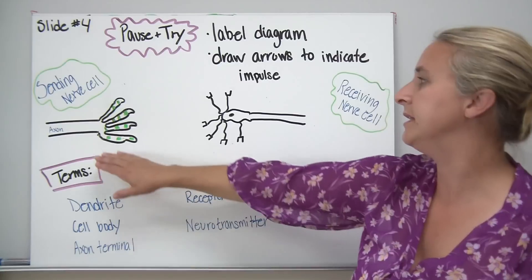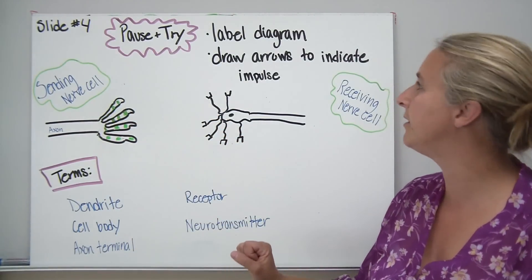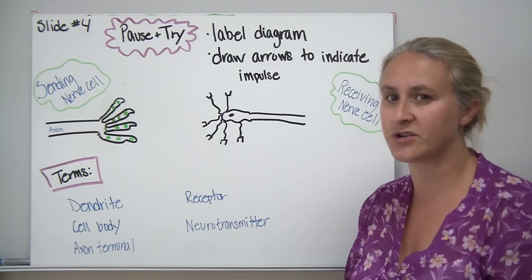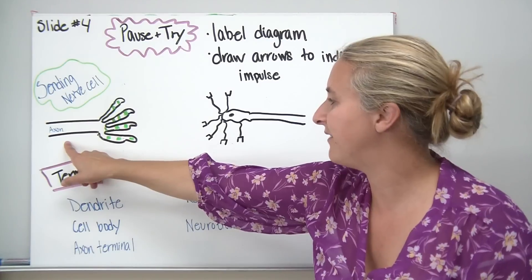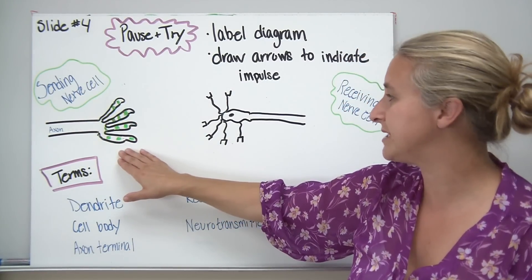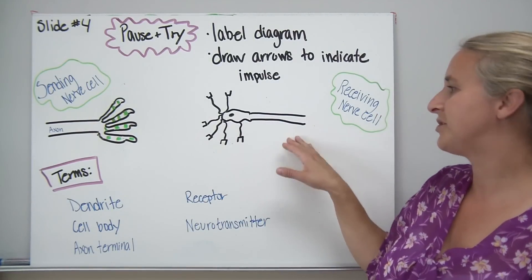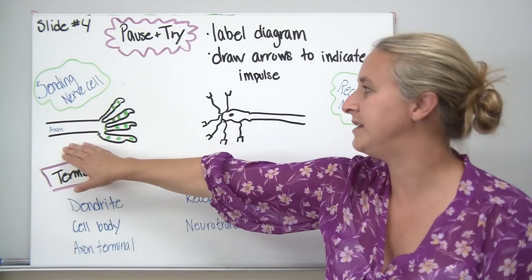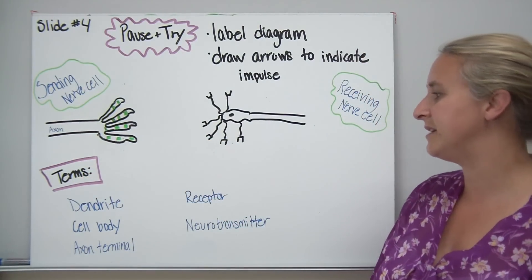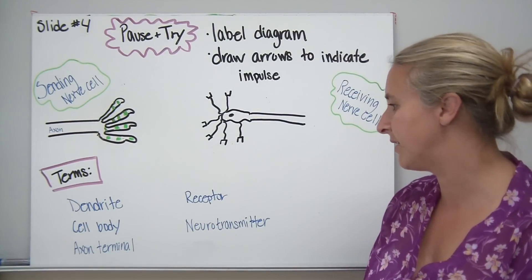I'd like you to pause and try to label this diagram using the terms listed below, and draw arrows to indicate which direction the impulse travels. We have an axon already labeled, along with other structures, and a receiving nerve cell on one side. So we have a sending nerve cell where information comes in and goes out to a receiving nerve cell — pause and attempt to label this diagram.